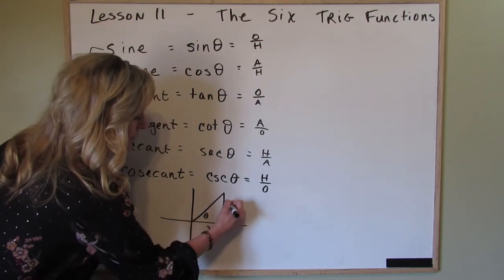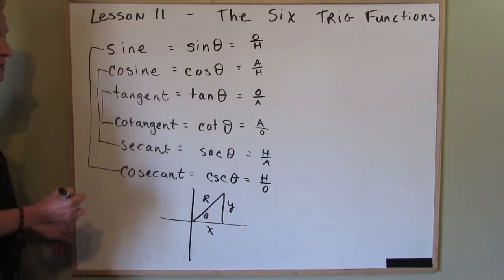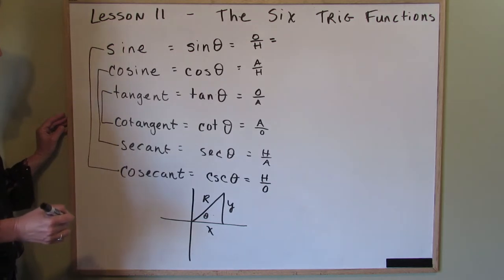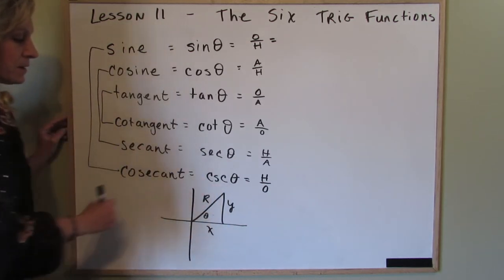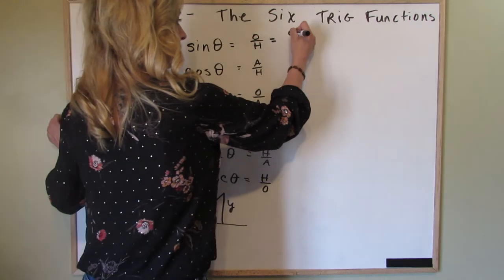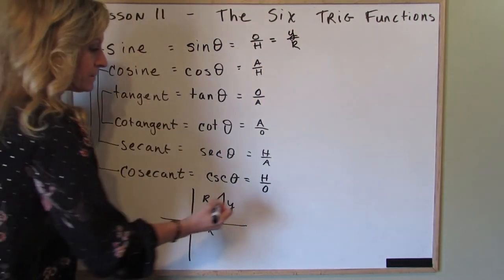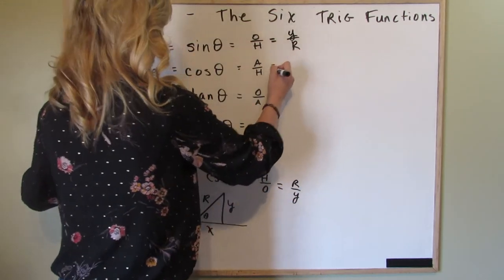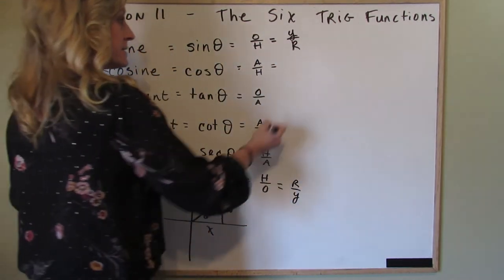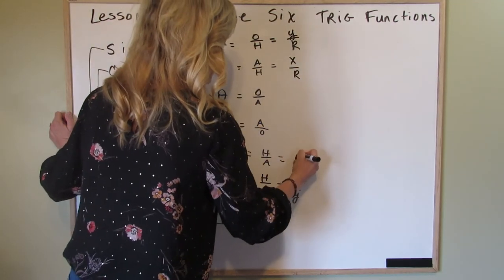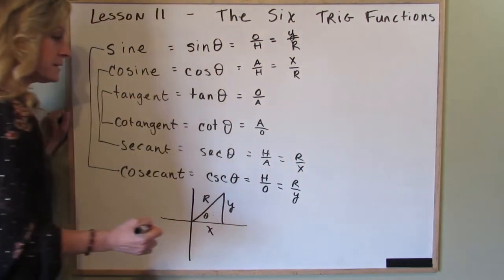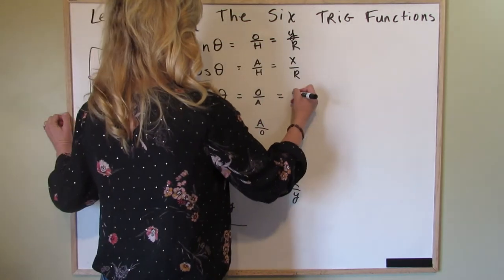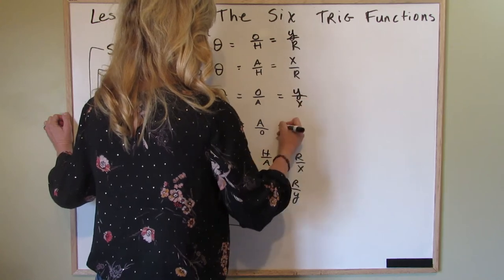We also learned things in terms of x, y, and r, so let's add that in here. The sine — opposite over hypotenuse — is y over r, which means the cosecant is r over y. The cosine relates to x: x over r, which means the secant is r over x. Tangent is y over x, which means the cotangent is x over y.